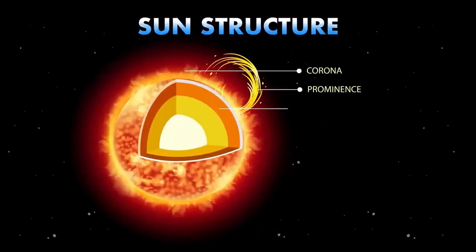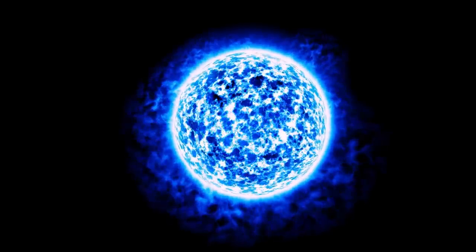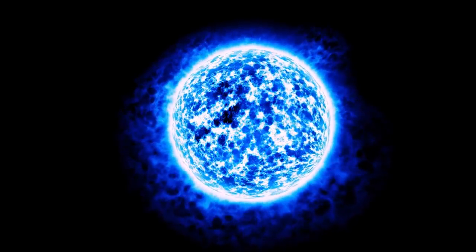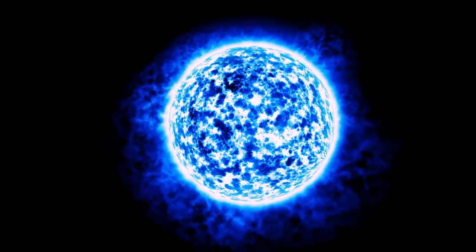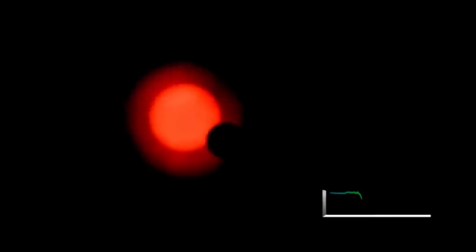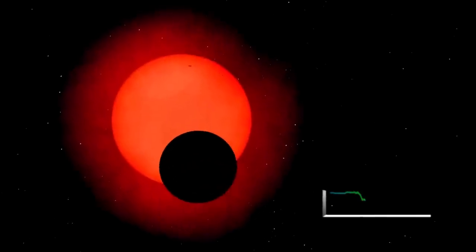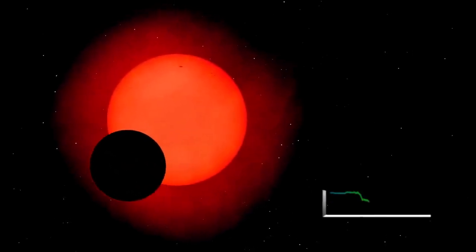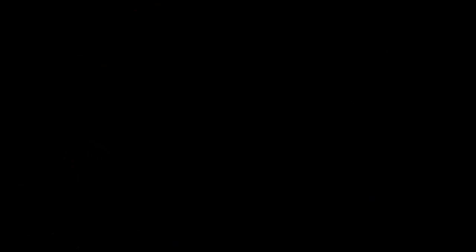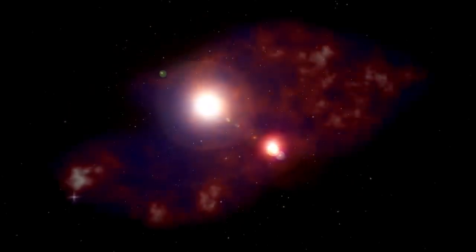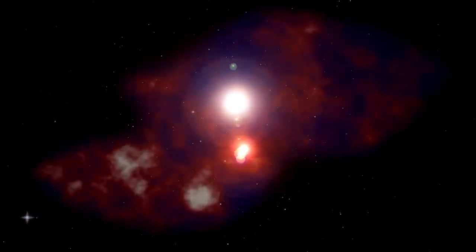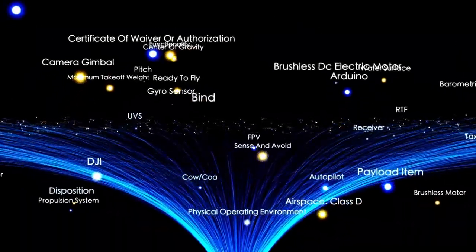The star would collapse in on itself in what's known as a core collapse supernova, an explosion so powerful it would release more energy in a few weeks than the sun will over its entire 10 billion year lifetime. During this event, Betelgeuse would briefly become as bright as the full moon, visible in the daytime sky. Despite how close it is in astronomical terms, Earth would remain unharmed by the explosion's radiation.